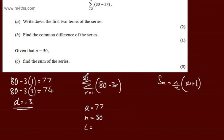l is the last term. So if we consider when r is equal to 50, this will be 80 minus 3 lots of 50, which is going to give me minus 70. So that's the last term when we've got r equal to 50.